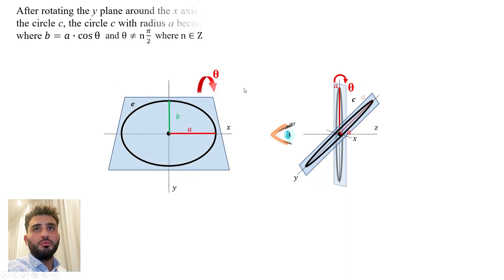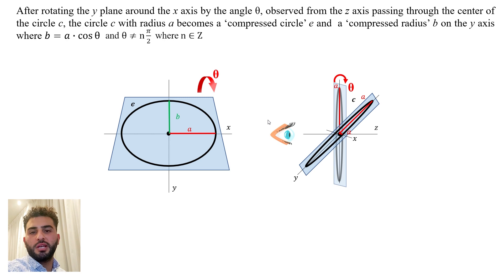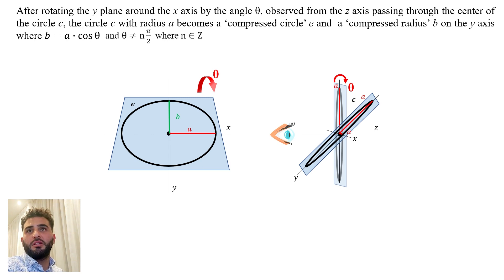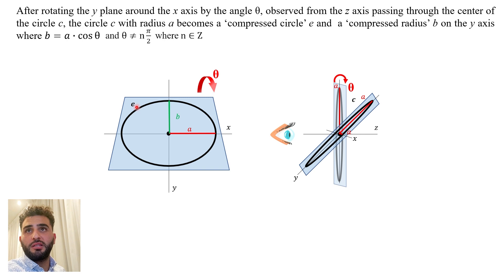We can see that the circle C, when you observe it, it becomes another shape. I'm not saying it's an ellipse, I'm just saying it's something else. So we can say it becomes a compressed circle — it's not the same circle C — that's why I gave it a different letter, I call it E.